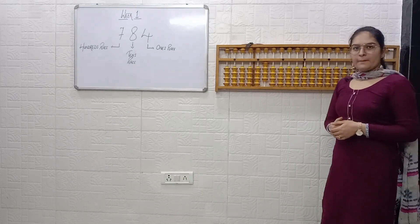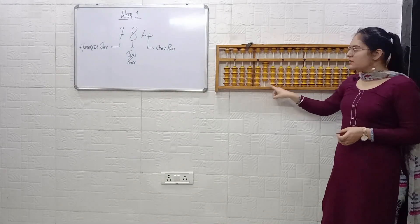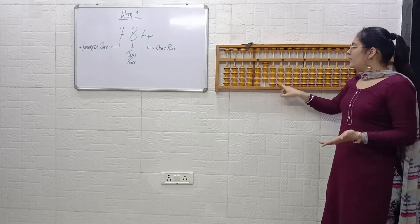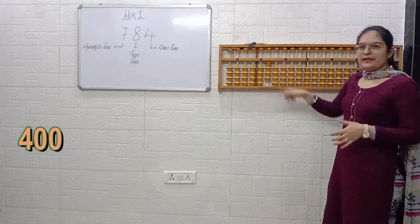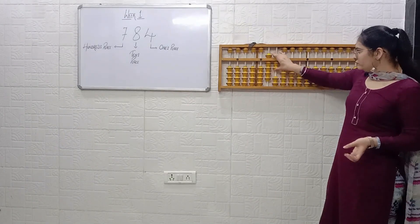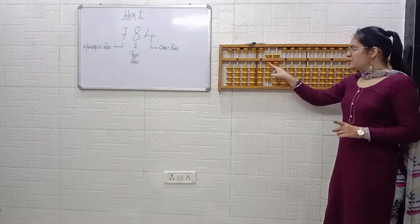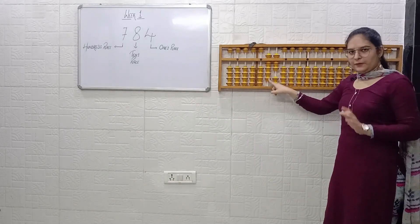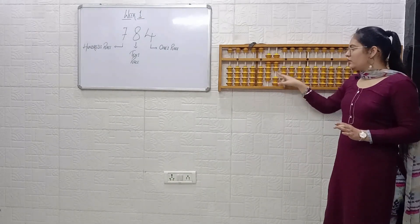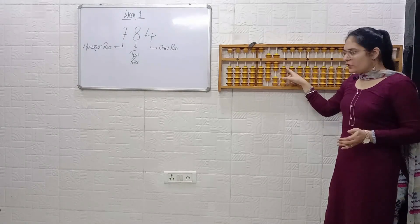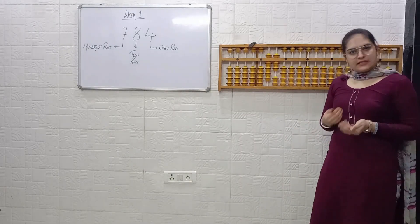One more example — tell me. At hundreds place: 1, 2, 3, 4 — that is 4. At tens place: it's 0. At ones place also: it's 0. So the answer is 400. Next: at hundreds place: 5, 6, 7, 8, 9 — keep that 9 in your mind. Tens place: 5, 6, 7. Ones place: 0. So the answer is 9, 7, 0 — that is 970.